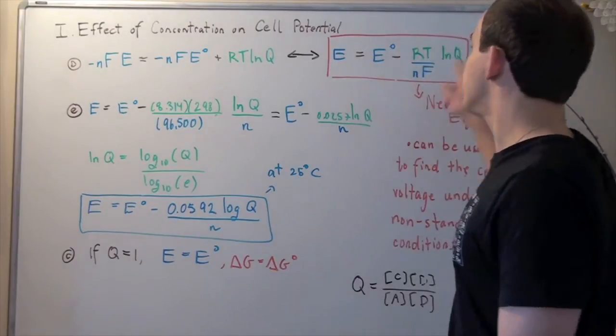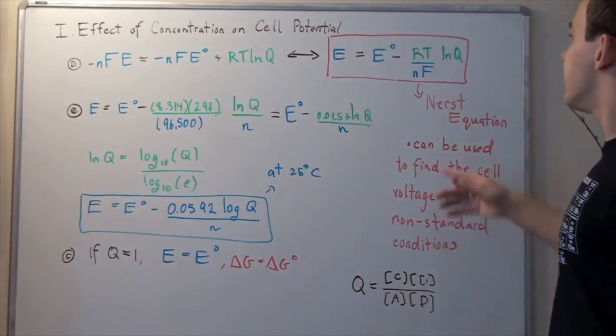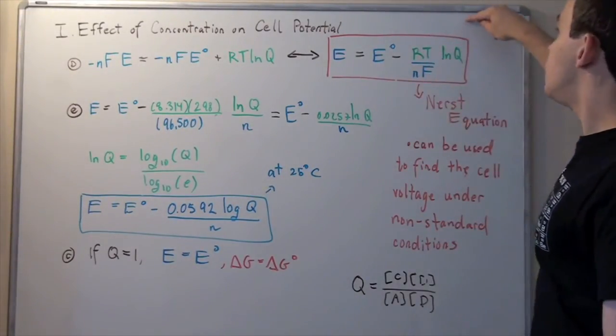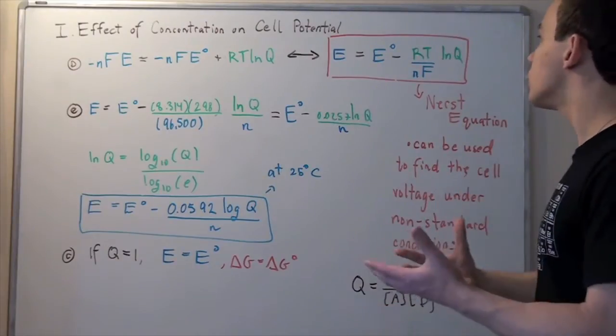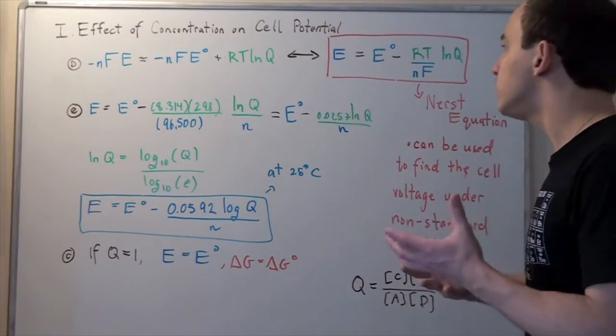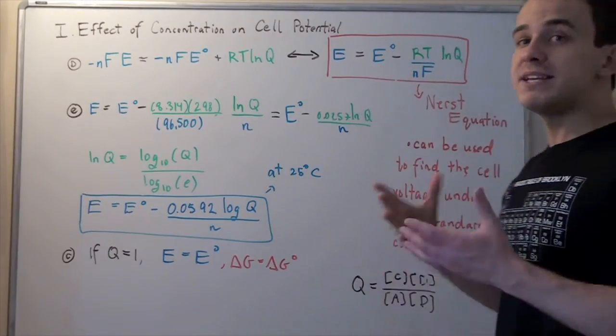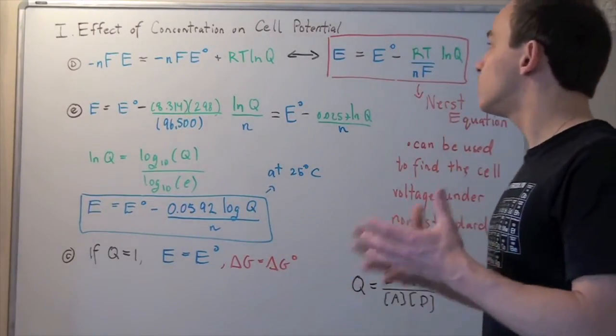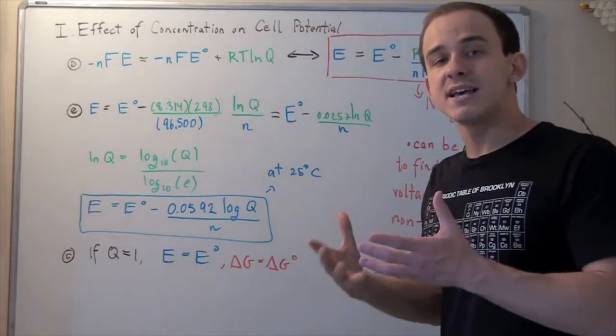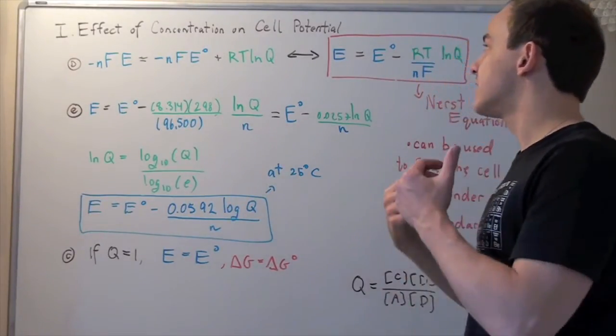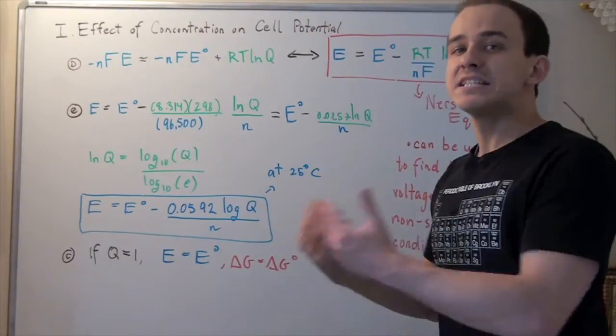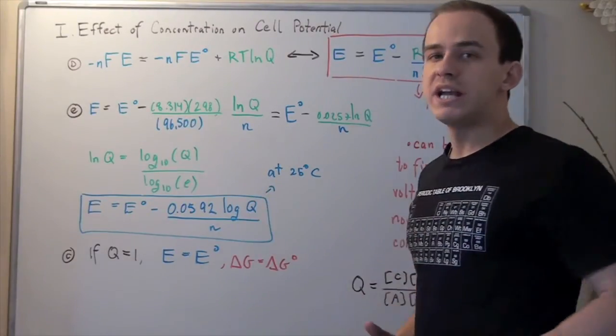Now, also notice what this formula states. It basically states that if our Q is bigger than 1, if it's large, that means our final voltage will be less than our voltage under standard conditions, and that makes sense, because that's exactly what Le Chatelier's principle says. It says that if we have more products, then our reaction will be less product-favored and more reactant-favored.